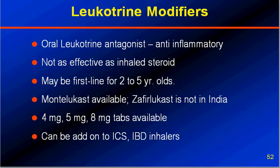There are two leukotriene modifier drugs available: Montelukast and Zafirlukast. We have only Montelukast in our country; Zafirlukast is not available. Montelukast is available as 4mg, 5mg, and 8mg tablets. 4mg is for very young children, 5mg for relatively older children, and 8mg for adults, to be used once a day.